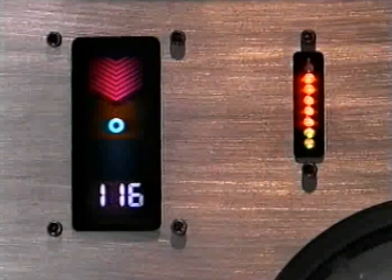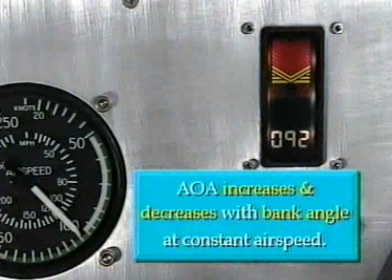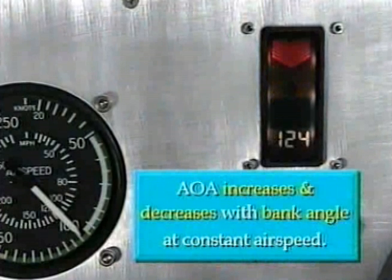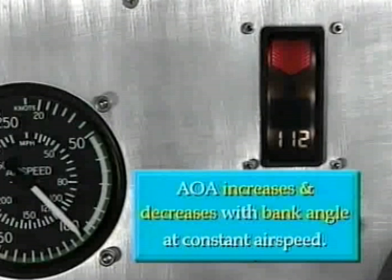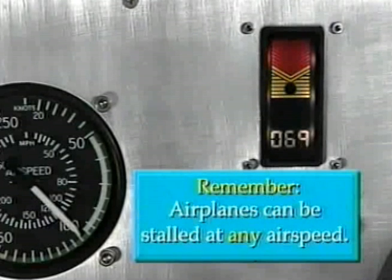Try a steep turn holding the indicated airspeed constant — let's hold the airspeed at 100 knots. As we roll into a bank, observe an increase in the angle of attack. And as we roll out of the bank, observe the decrease in the angle of attack. The airspeed remains the same, and we can stall an airplane at any airspeed.